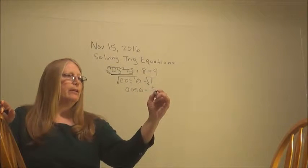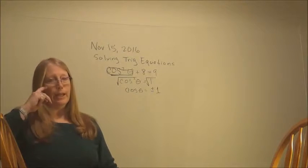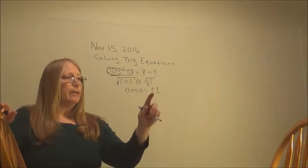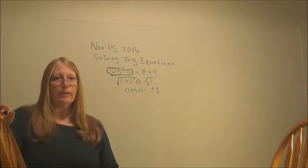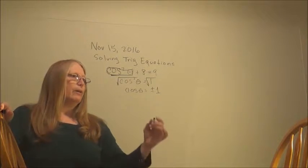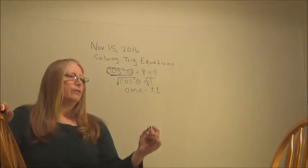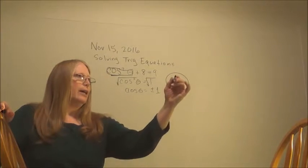And remember, when you take the square root of both sides, you get a plus or minus situation. If you forget that, you'll lose some of your solutions. So, plus or minus 1. So where does the cosine equal that?